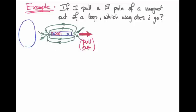In this example problem, I'm going to envision what happens if I try to pull the south pole of a magnet out of a loop of wire.